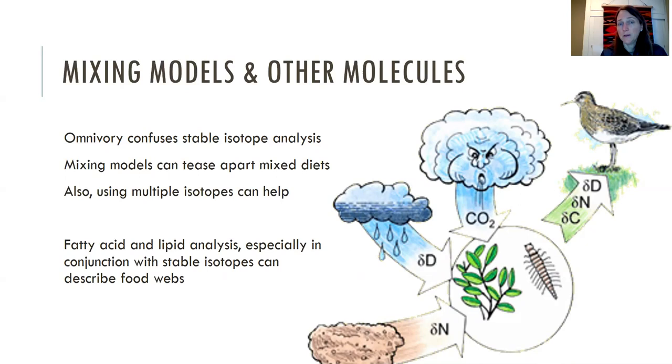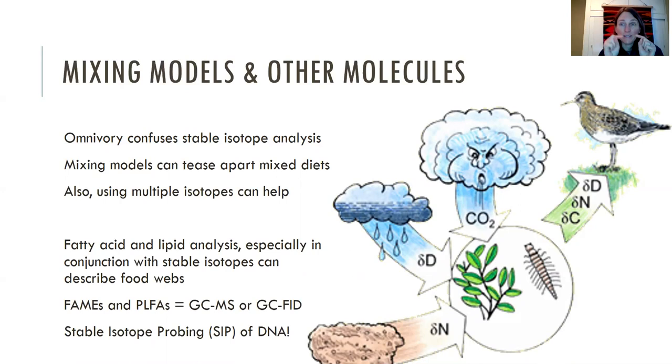You can also look at specific types of molecules, so things like fatty acids and lipid analysis, especially in conjunction with stable isotopes, can really help describe food webs. So things like fatty acid methyl esters, phospholipid fatty acids—these are measured on a GCMS or GCFID. And you can also do stable isotope probing of DNA, so you can get at the stable isotope concentration of the actual DNA molecule. And so we can really just—only recently are we able to look at stable isotopes of individual bacterial cells or individual fungal cells, which is really exciting.